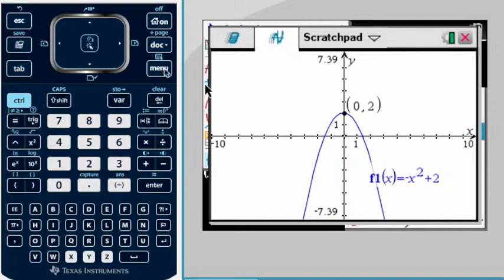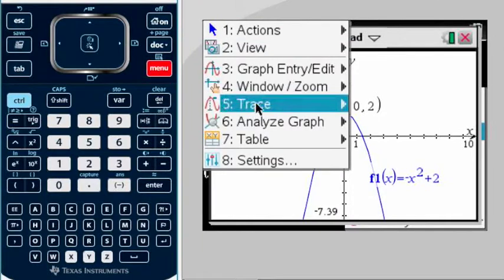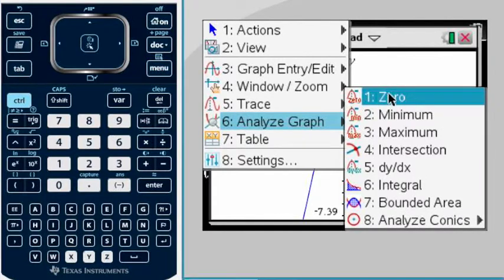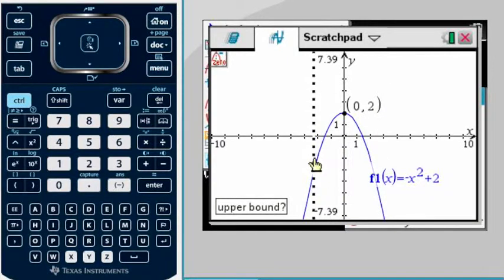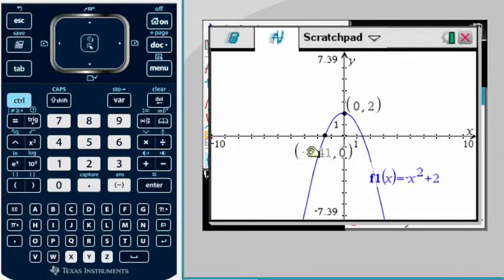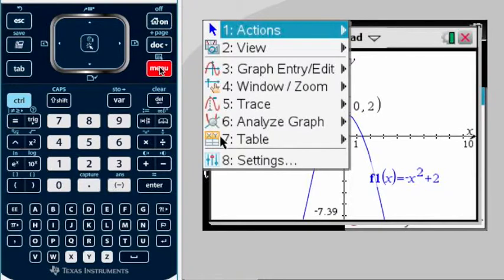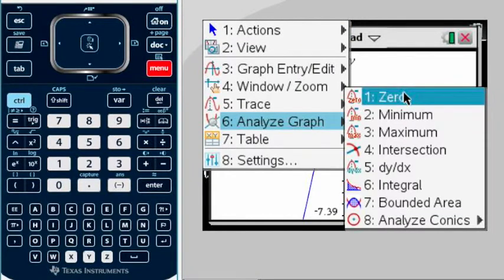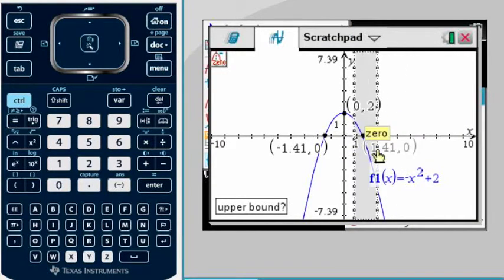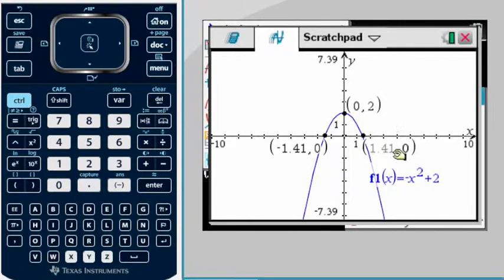Now I'm going to look for my zeros, same as we did before. Menu, Analyze Graph, zero, and we're going to do one at a time. First we're going to do this one, there's my first zero. Then again, menu, Analyze Graph, zero again, and I do my second one. There's my second zero, simple as that.